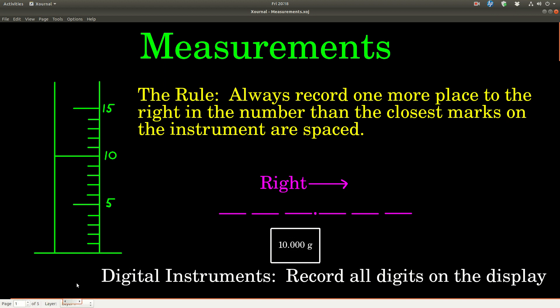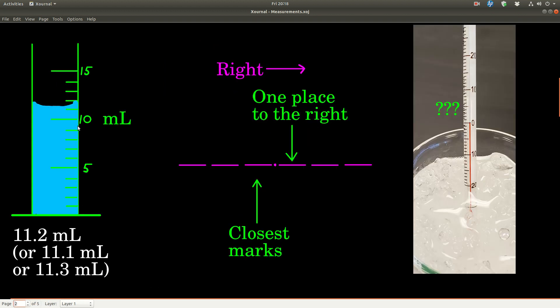Always record one more place to the right than the closest mark. For example, let's say we put some water into that graduated cylinder. You remember we always read the bottom of the meniscus. Let's say there's five, ten, eleven - the bottom of the meniscus is between 11 and 12 milliliters. Because the closest marks are one milliliter apart, we're going to record our measurement to the tenths place. Here's where you have to estimate: how far between the 11 and the 12 is it? Is it halfway? Probably not quite halfway, might be a little bit less. Maybe 11.2, 11.3, 11.4, 11.1. That's up to you and it's understood when you write that measurement down that last digit you write, the two or whatever you write, there's some uncertainty in it, but it's still important.